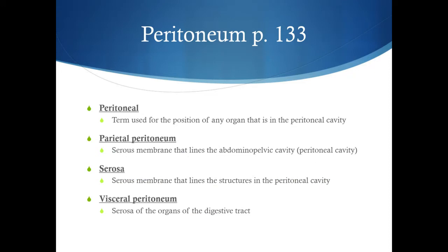Just like we saw with the pleura and with the pericardium, there will be a double-layered membrane surrounding the peritoneal cavity. The parietal peritoneum lines the cavity itself and is not physically touching any organs, whereas the visceral peritoneum physically touches all of the organs found in the peritoneal cavity. Serosa is another term used instead of visceral peritoneum — it is usually the outer layer of one of these organs, but it is continuous with the visceral peritoneum.